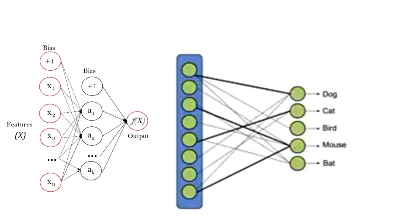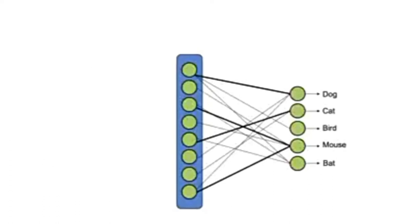We can use the following diagram. We have five neurons in the output layer, one for each class: dog, cat, and so on.